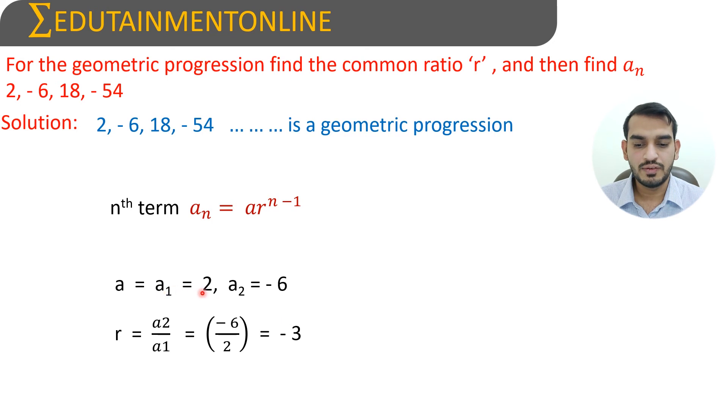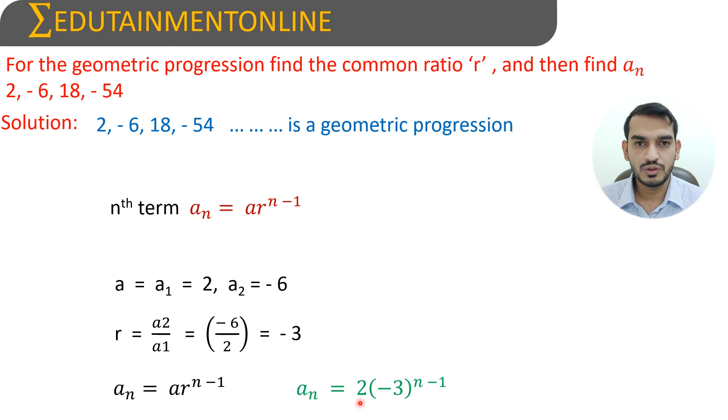Substituting the values of A and R into the nth term formula, the nth term is An equals 2 into (-3) whole power N minus 1.